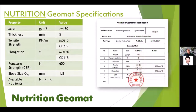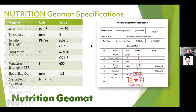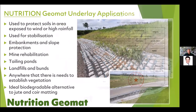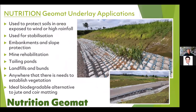There's a specific table showing what nutrients are available from the nutritional mat we supply. The main applications are areas exposed to high wind and high rainfall, stabilization on banks and slope protection, mine rehabilitation sites, and anywhere there's a need to establish vegetation. It's also an ideal biodegradable alternative to coir matting.